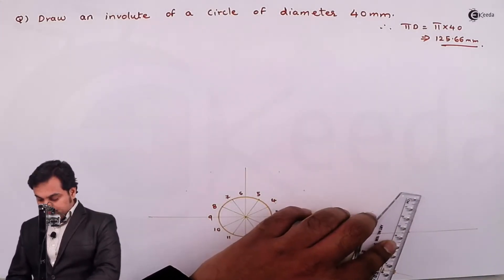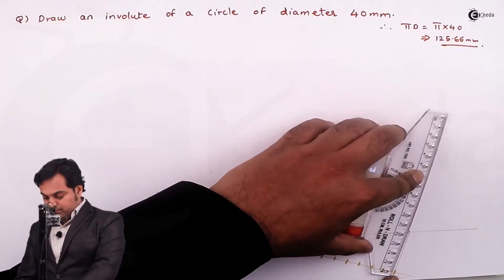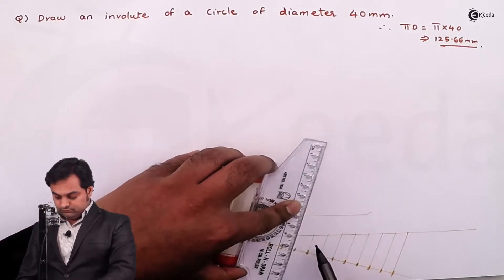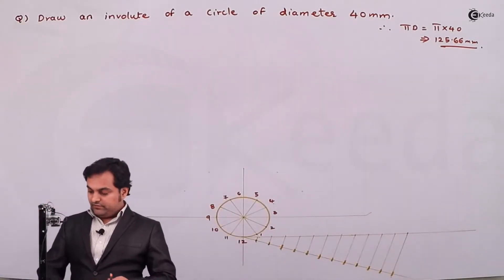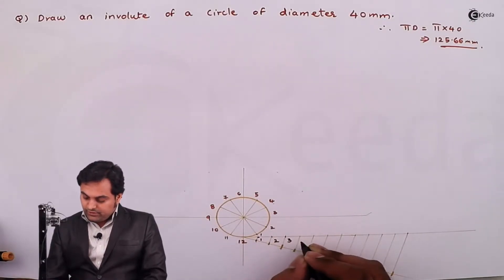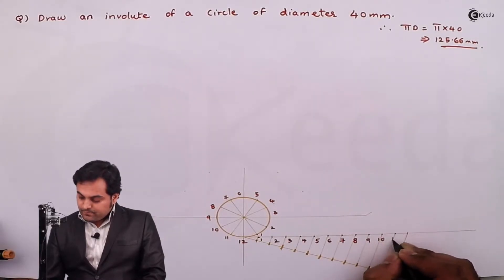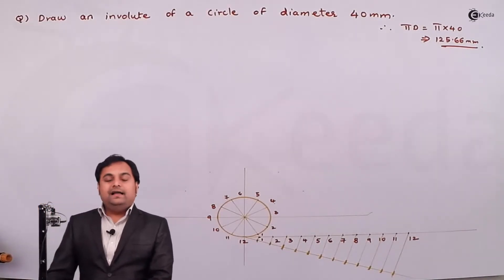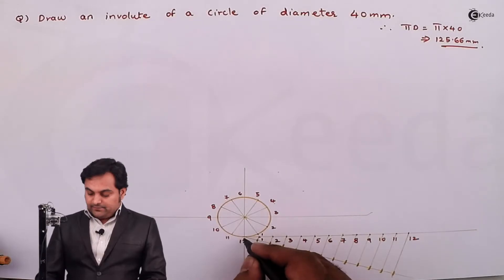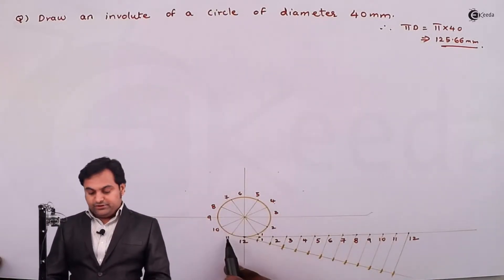I'll connect the last division to the point where the circumference ends, then draw parallel lines through these points. I'll give the notations 1, 2, 3 and so on. Now I'll start unwinding from point number 12. The string starts from there, and through all the division points I am going to draw tangents.